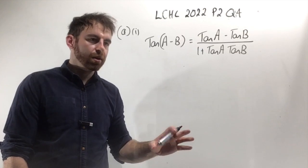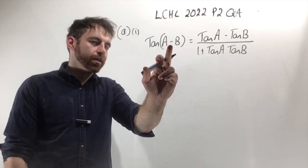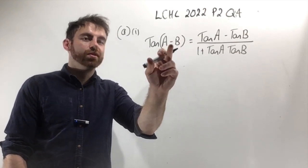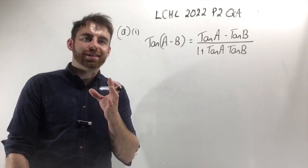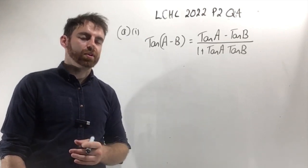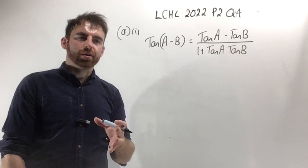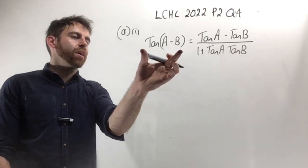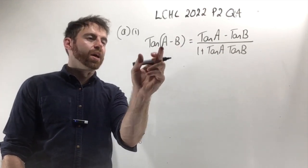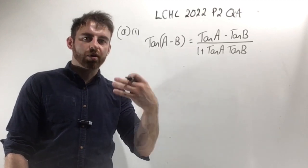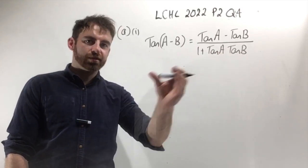This proof is identical to tan A plus B—it's just that where there was a plus in the other proof, there's a minus now. But other than that, it's exactly the same. In order to start this off, we're going to start with the left hand side, tan A minus B, and eventually try and break it down so that we end up with this fraction.